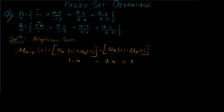For the second value, we add 0.5 + 0.2 = 0.7, then subtract 0.5 × 0.2 = 0.1, giving us 0.6. For the third value, we add 0.3 + 0.7 = 1.0, then subtract their multiplication.